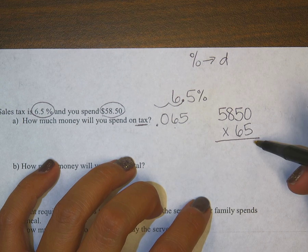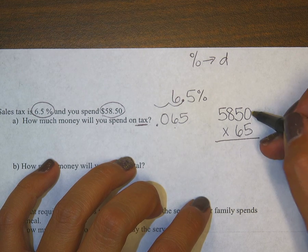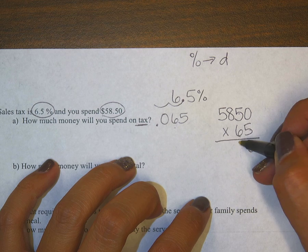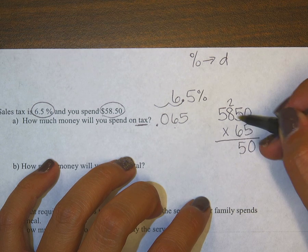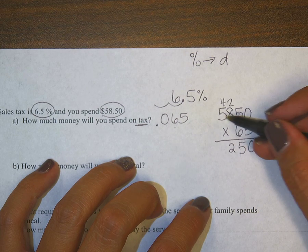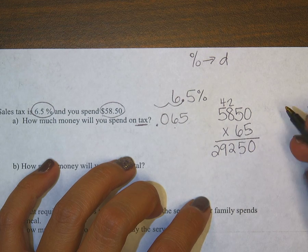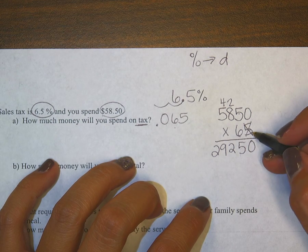After I multiply, I'll reintroduce my decimals into this work and then we can go from there. 5 times 0 is 0, 5 times 5 is 25, 5 times 8 is 40 plus 2 is 42, carry the 4, 5 times 5 is 25 plus 4 is 29. Now some of you stopped there, but we aren't finished. We've multiplied by the 5, but now we need to multiply by the 6.